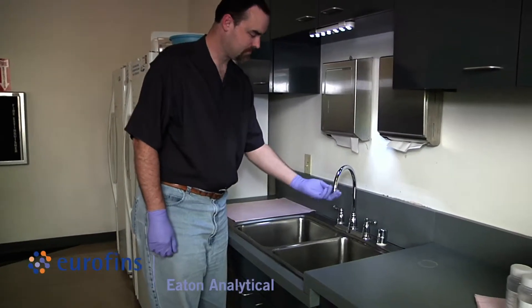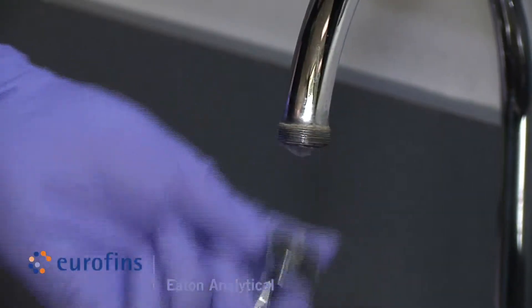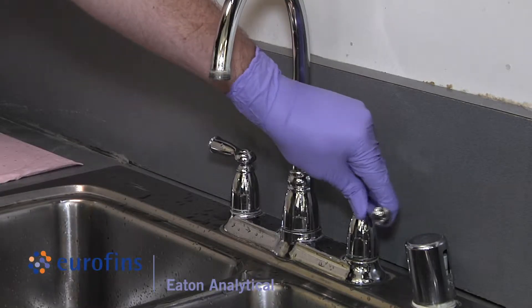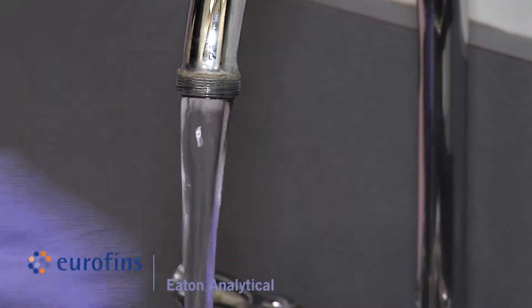Before sampling, remove the aerator and screen if sampling from a faucet or tap. Open the tap and let the water run at fast flow for approximately five minutes.